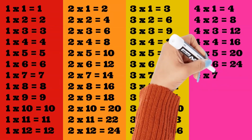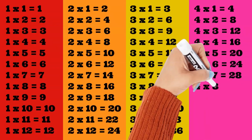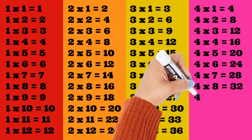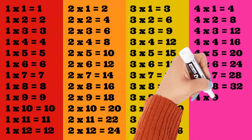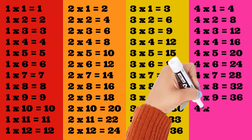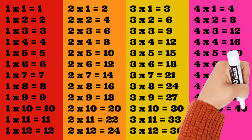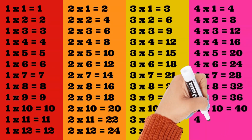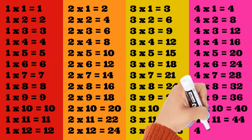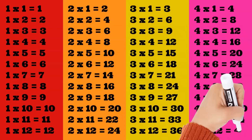4 times 7 is equal to 28. 4 times 8 is equal to 32. 4 times 9 is equal to 36. 4 times 10 is equal to 40. 4 times 11 is equal to 44. 4 times 12 is equal to 48.